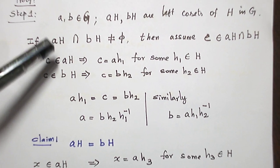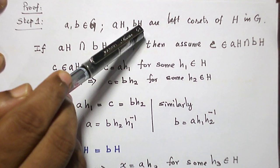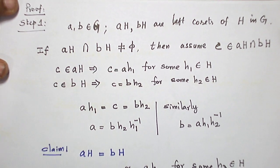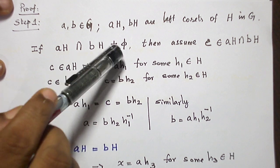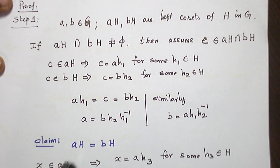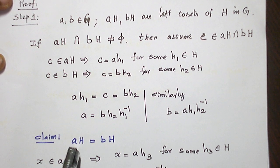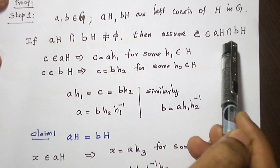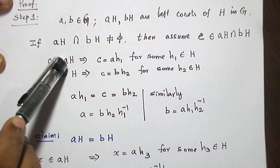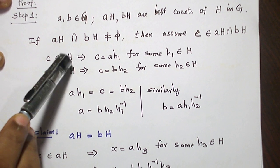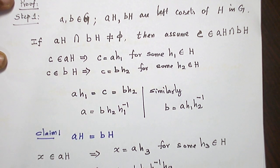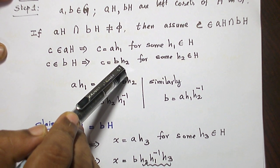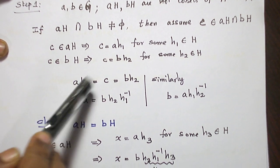Now, if we take two left cosets, we have to prove they are either disjoint or they are identical. Suppose they are not disjoint — then I have to prove they are identical. So I take them as not disjoint; there is a common element C. C is in AH and BH. If it is in AH, it takes the form A·H₁. If it is in BH, it takes the form B·H₂. So A·H₁ = B·H₂.